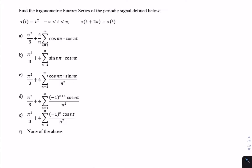This is a Fourier series question. We're given a signal x of t, and we're asked for the Fourier series representation — it's a multiple choice question. The first thing we need to find is the period, and we can get that straight from here. T equals 2π, and from that we know that ω₀ is 2π over T, so that's 1 radian per second.